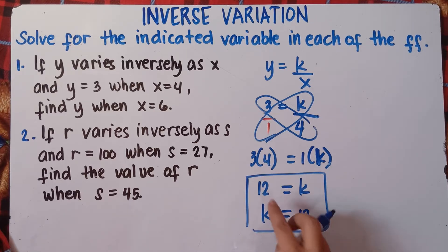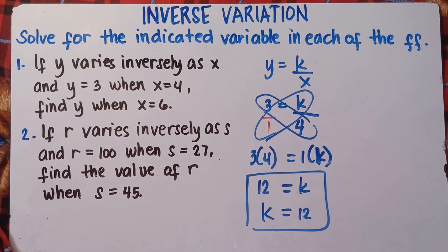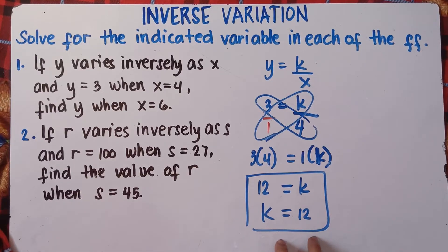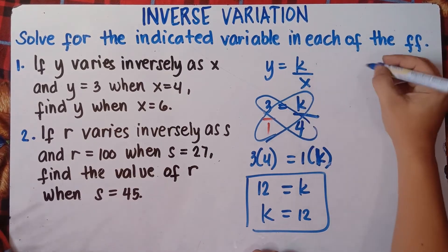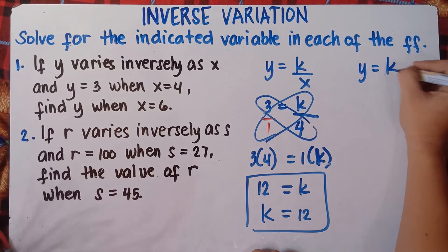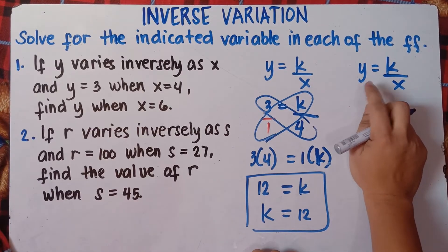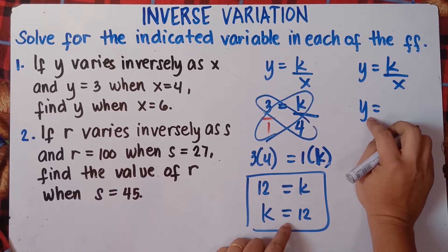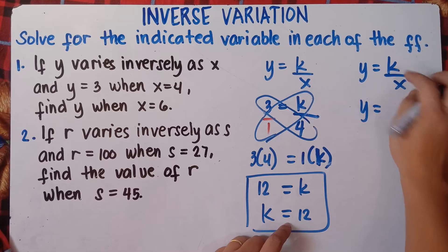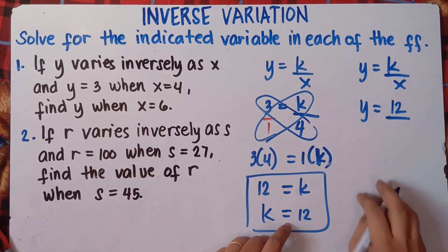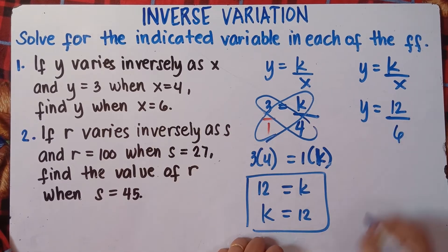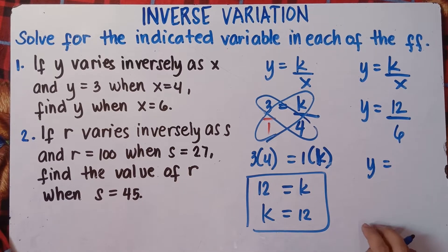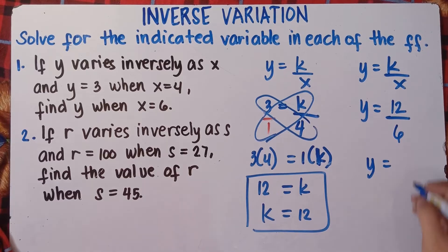Note that 12 equals k is just the same as k equals 12. Once you get k, simply substitute it into the equation to find y. Write y equals k over x, substituting k equals 12 and x equals 6: y equals 12 over 6. So 12 divided by 6 is 2, and our y equals 2.